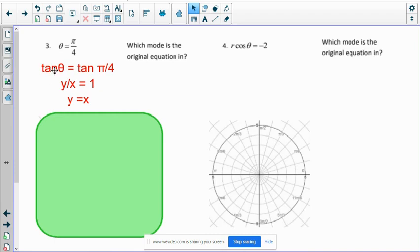And tangent can be written as y over r and x over r. Or if I multiply by the reciprocal, just y over x. And then I could very easily swing that x up. And I get the equation y equals x.